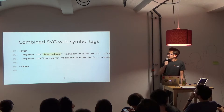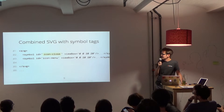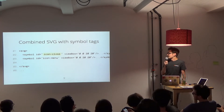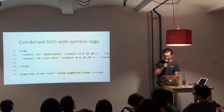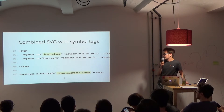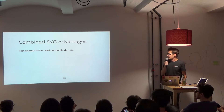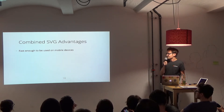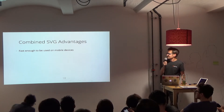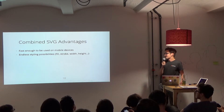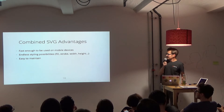I propose the method of combining SVG with symbol tags. It's quite simple: you create an SVG with symbols, give IDs to the symbols, and put your icons inside them. Then from your HTML you simply refer to the particular symbol you would like to use. This method is fast enough to be used on mobile devices — it is five times slower than icon font but fast enough. It has endless styling possibilities: you can use CSS to change the style of SVG, set fill, stroke, width, height, and all that. And it is easy to maintain because you only need to create this bundle with a text editor.